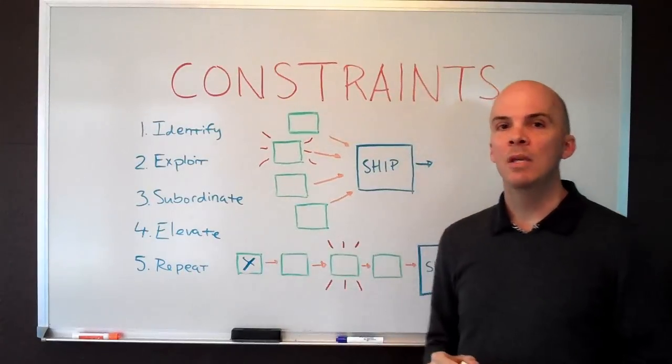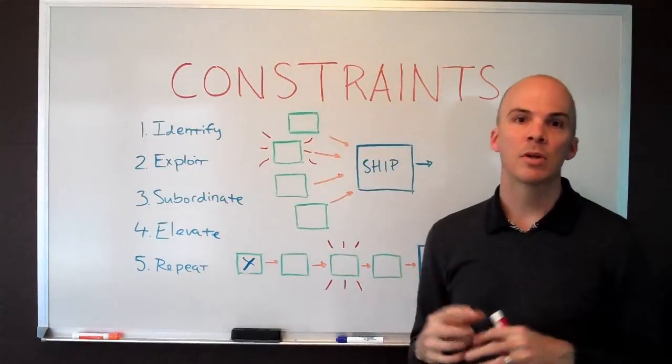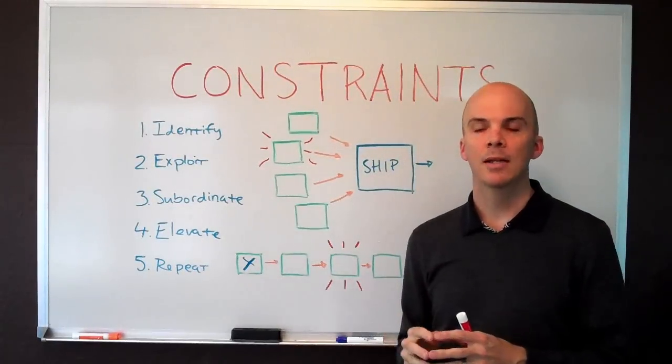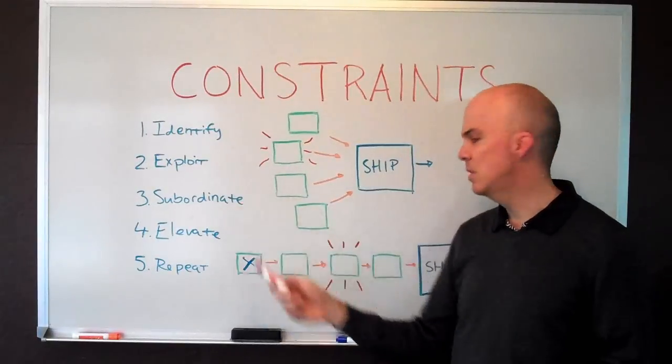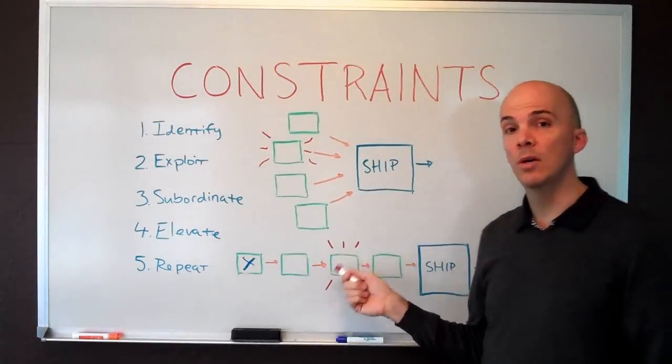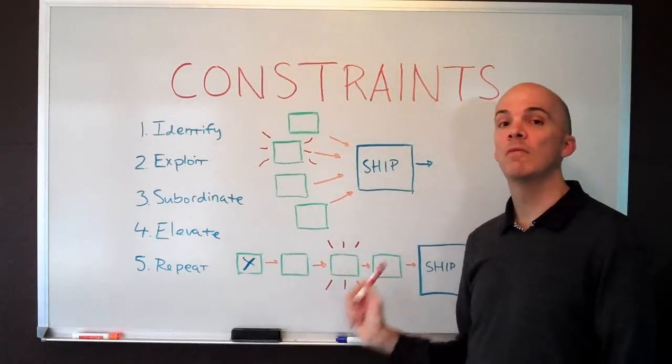Step three is subordinate, and that means subordinate everything else in the organization to fixing this bottleneck. That doesn't mean take everybody off their jobs. It just means that all decisions and process and policy stuff needs to be focused around that we are addressing this bottleneck so we can do more faster.